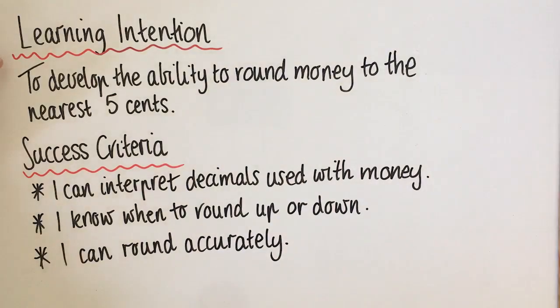The learning intention for this lesson is to develop the ability to round money to the nearest five cents. In order to be successful you have to be able to interpret the decimals in money, know when to round up or down, and then actually do the rounding.